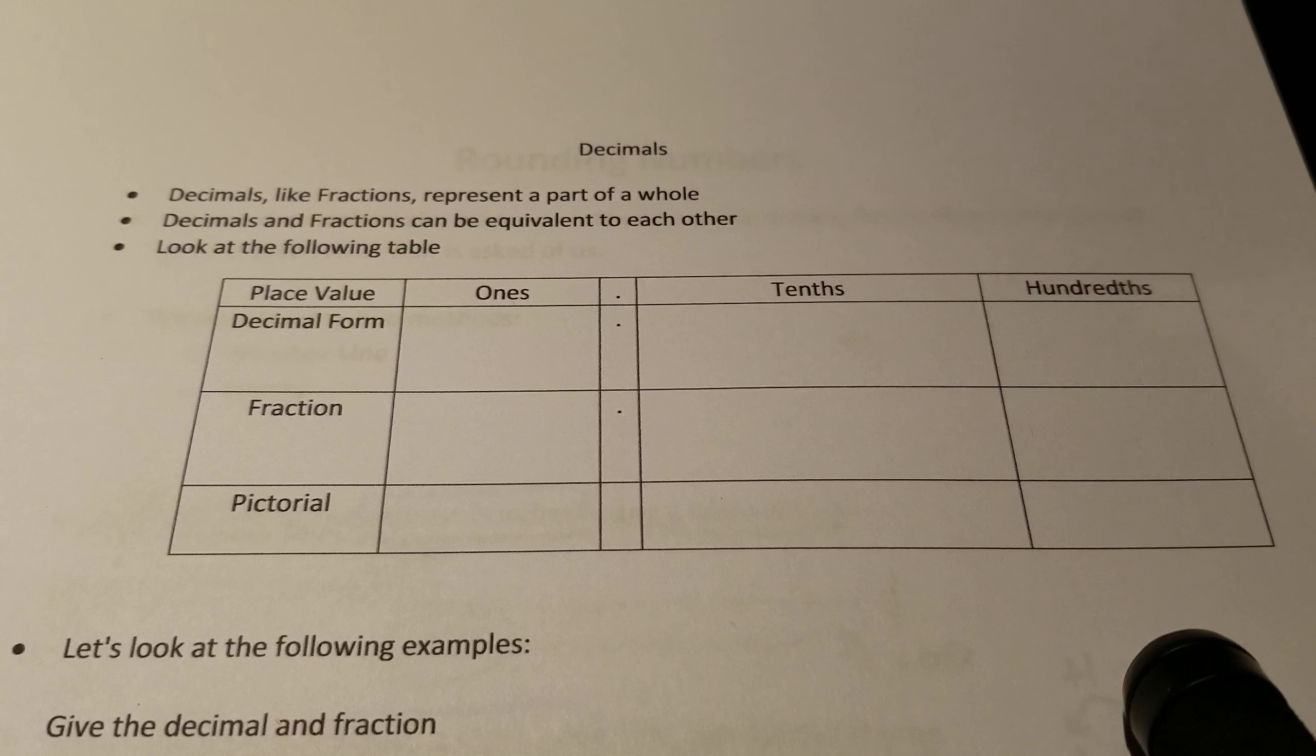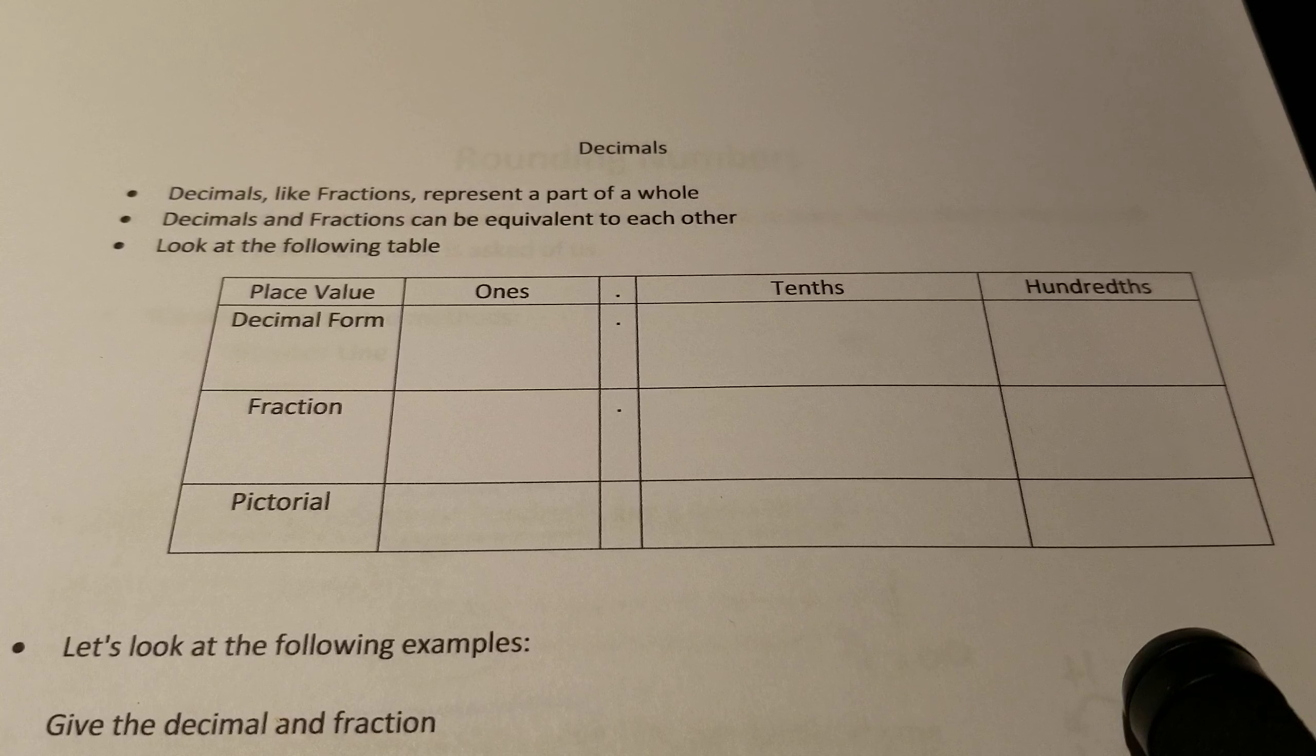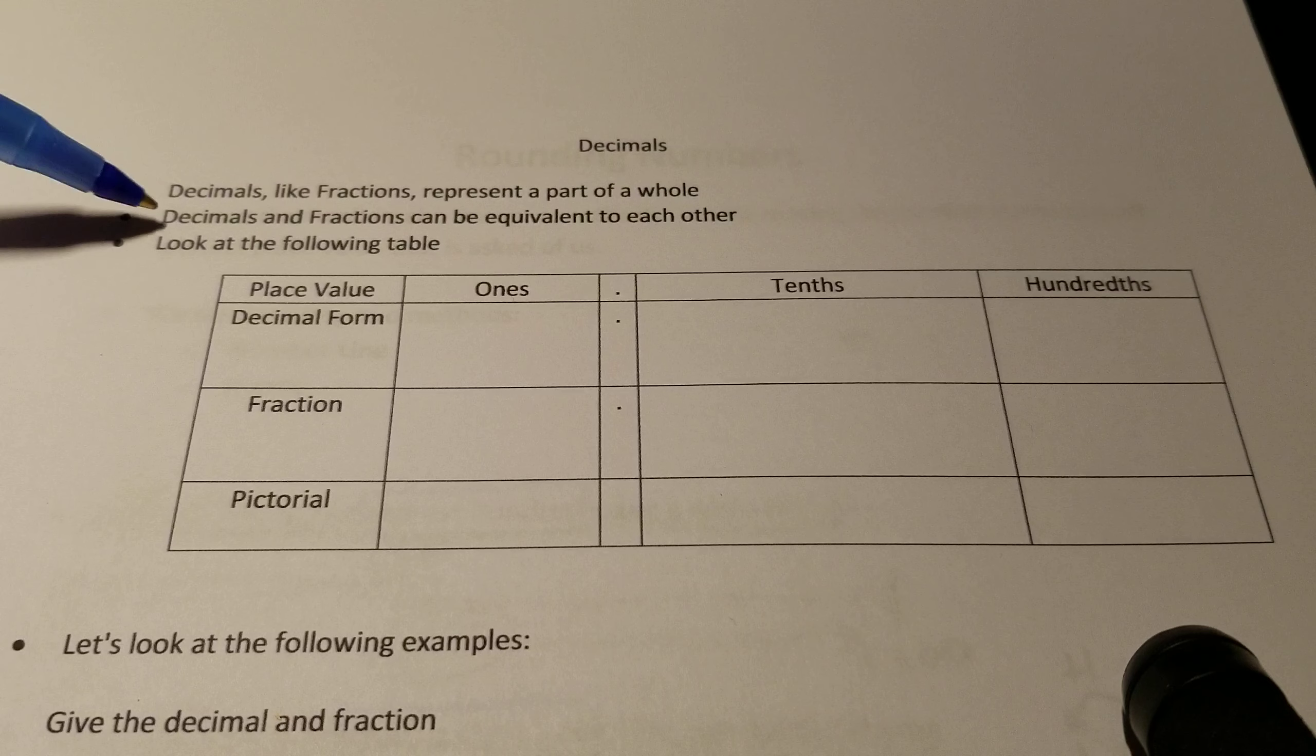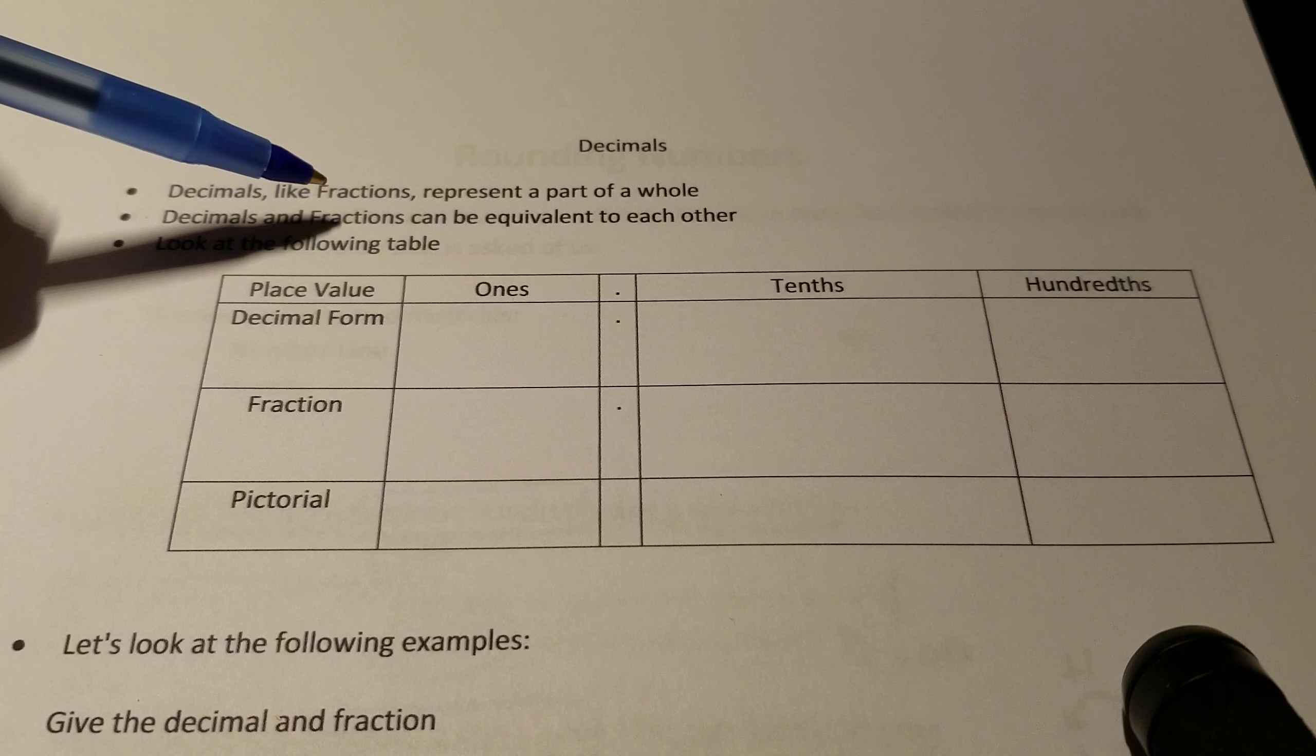To start off, we must understand that decimals, like fractions, represent part of a whole. They are not an entire whole. It's just a part of it. So in that case, decimals and fractions can be equivalent to each other.